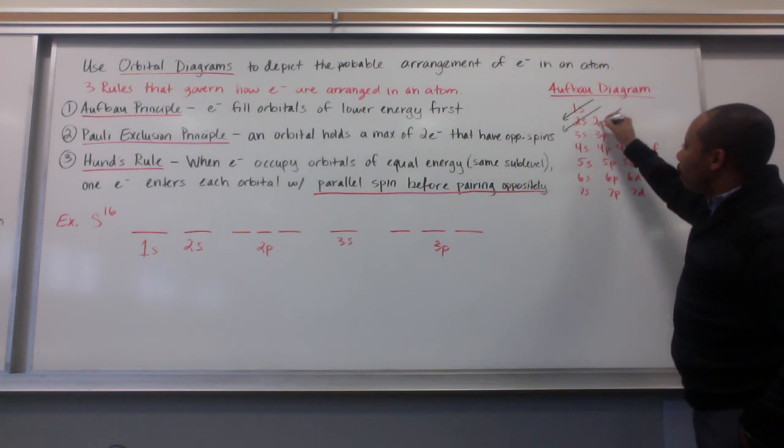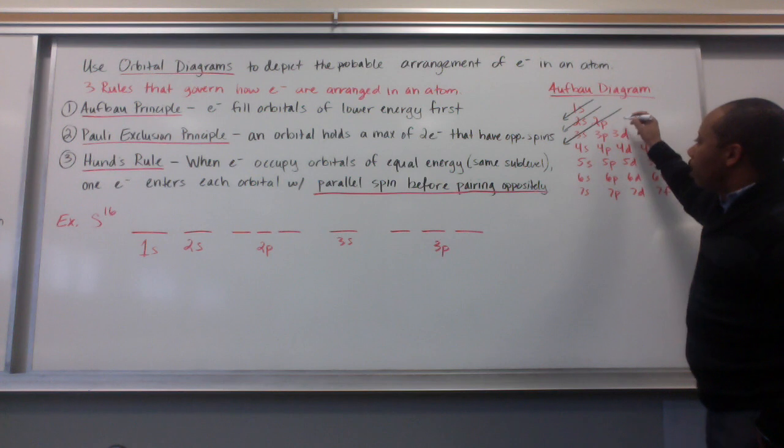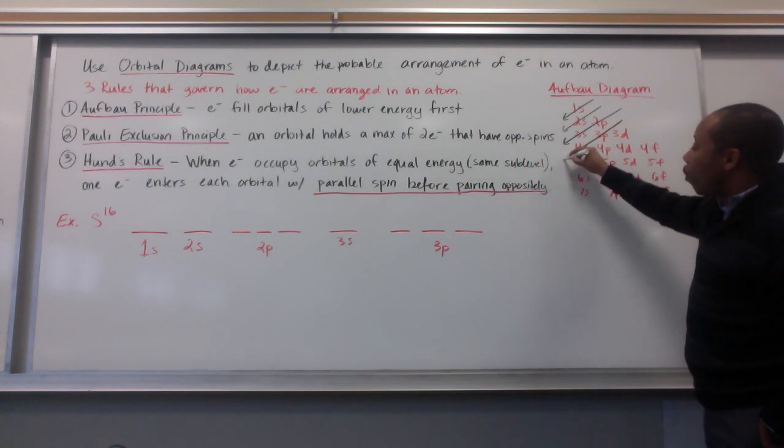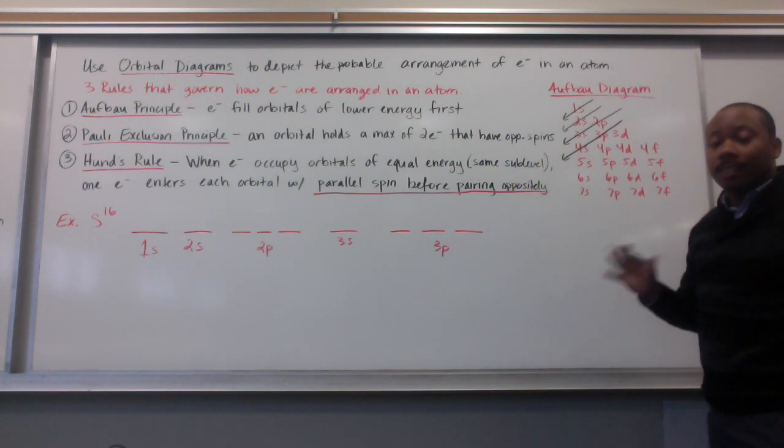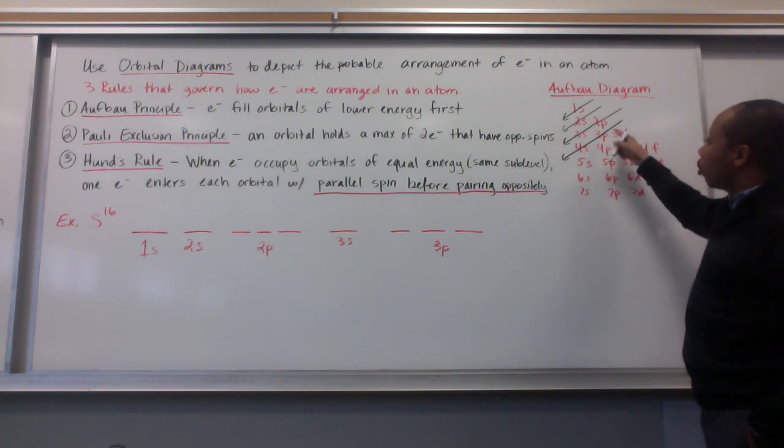Then 3s. Now, here's where it changed a little bit. Then 3p and 4s. You would think maybe 3s would fill, then 3p, then 3d, but actually, that doesn't happen. So, we have 3p, then 4s, then 3d, 4p, 5s, and so forth.